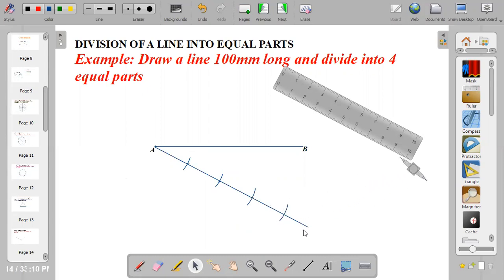So when you get to the last division, be it eight, five, or whatever is given in the question, you join the last division to point B.